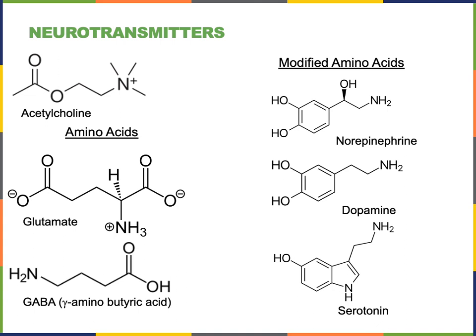Norepinephrine is an amino acid-based neurotransmitter made from the amino acid tyrosine. It is a major neurotransmitter in the peripheral nervous system — specifically, the sympathetic division of the autonomic nervous system contains a large number of neurons that release norepinephrine. These are known as noradrenergic neurons. Norepinephrine can also function in the central nervous system with a variety of context-dependent functions.